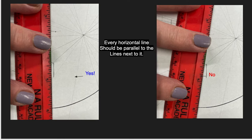So you can see on the left, that's correct, and on the right, I'm about to make a mistake. I'm about to draw it crooked. So keep them parallel.